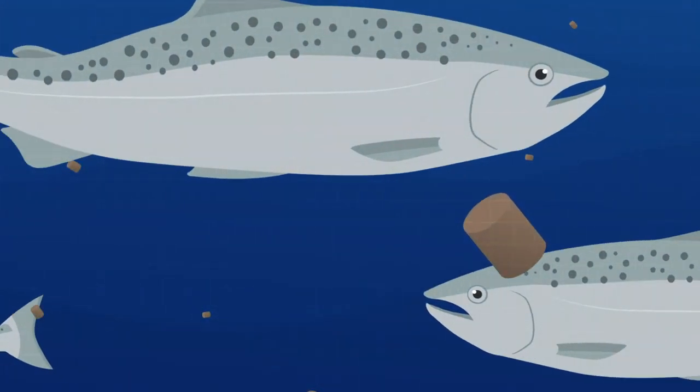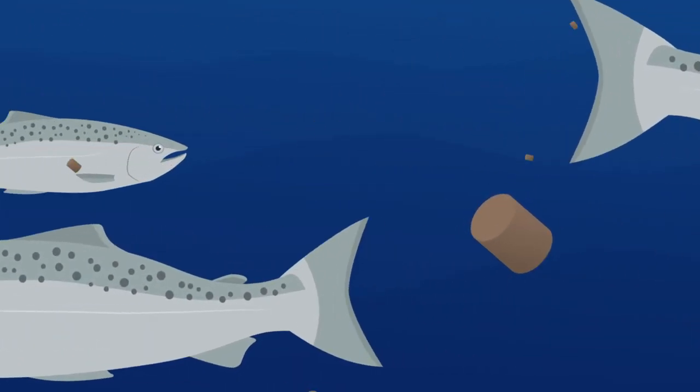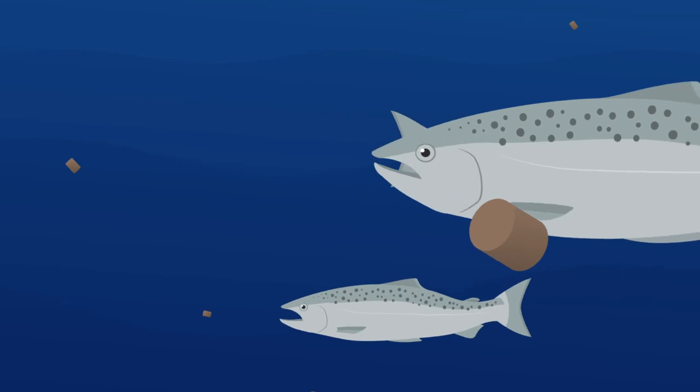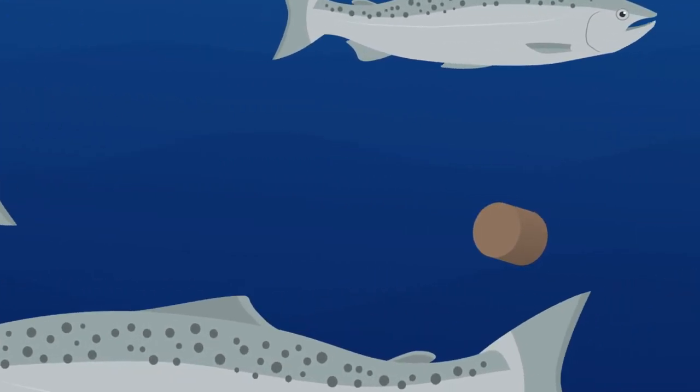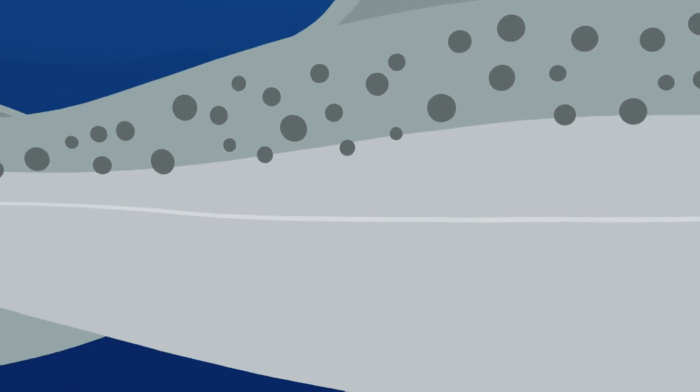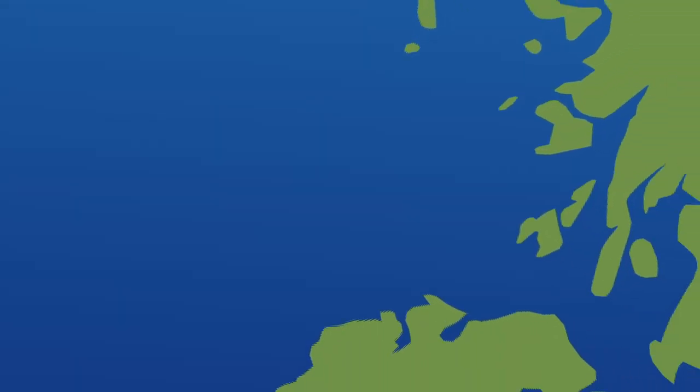Some of it is made from trimmings, a great circular use of byproducts. The special soy we use in salmon feeds comes from certified sustainable sources, so the food we use on Scottish salmon farms isn't just good for the salmon.